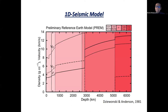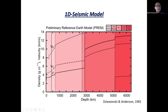In 1981, analysis of the seismic record produced one-dimensional velocity models for the Earth — basic information about the Earth's interior. These are spherical averages of the velocities. As you can see, there are discontinuities in compressional waves, in shear waves, and in the density, which are caused by phase transitions in some of the minerals in the aggregates. And they define the boundaries of these layers in the Earth's mantle and the Earth's core.